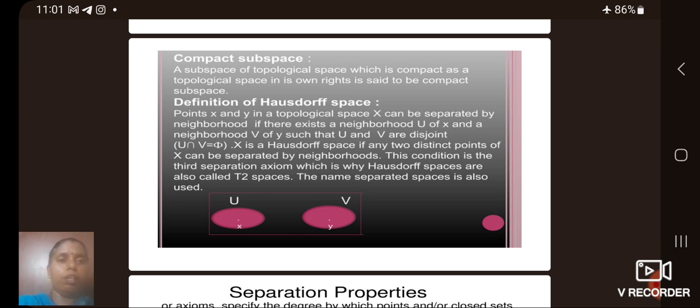Definition of Hausdorff space: Points x and y in a topological space X can be separated by neighborhoods if there exists a neighborhood U of x and a neighborhood V of y such that U and V are disjoint. That means U intersection V equals empty set. X is a Hausdorff space if any two distinct points of X can be separated by neighborhoods.